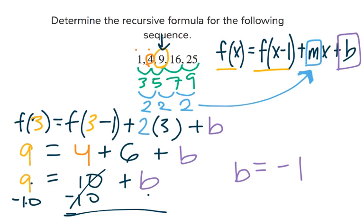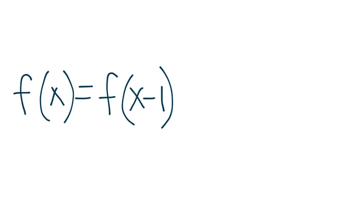So then we're going to take this and plug in a negative 1 for the formula here. So if we want to write out our formula, then we're going to get f(x) = f(x-1), so each term is the previous term,